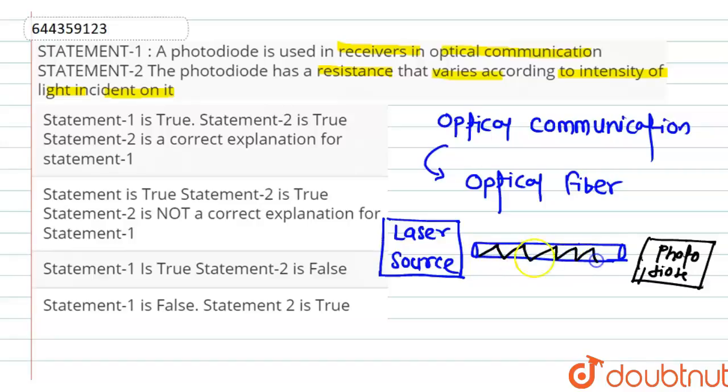And in this optical fiber light travels, which is received by the photodiode. Because we know that in case of radio waves, these radio waves are received by antenna or dipoles.